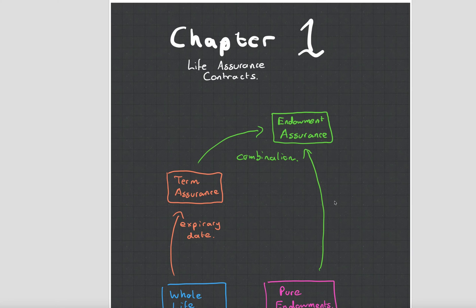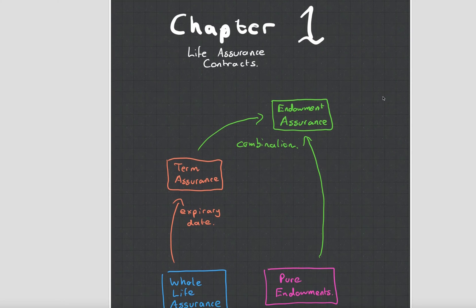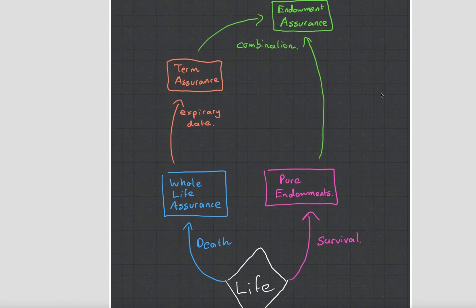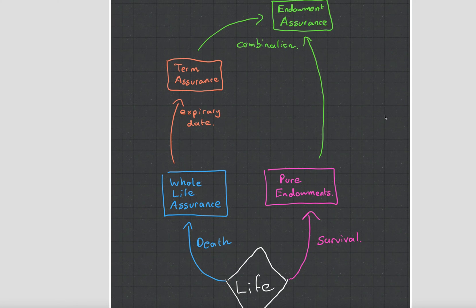Hey guys, it's MJ the Student Actuary and we're going to be talking about chapter 1 for subject CT5 which is Life Assurance Contracts. Now basically you just need to know this diagram to understand the theory behind this chapter.